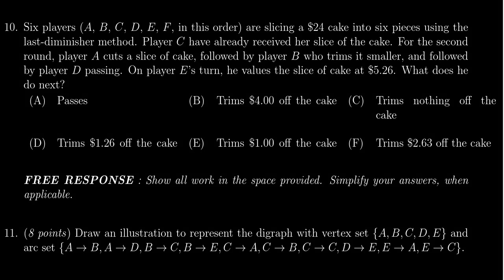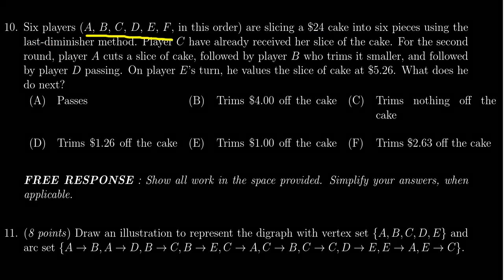In this video we provide the solution to question number 10 for practice exam number two for Math 1030, in which case we have six players A, B, C, D, E, F who are slicing a $24 cake into six pieces using the last diminisher method. With last diminisher we have to order the players, and so we're just going to go in alphabetical order A, B, C, D, E, F. So that's the order we're going to use here.